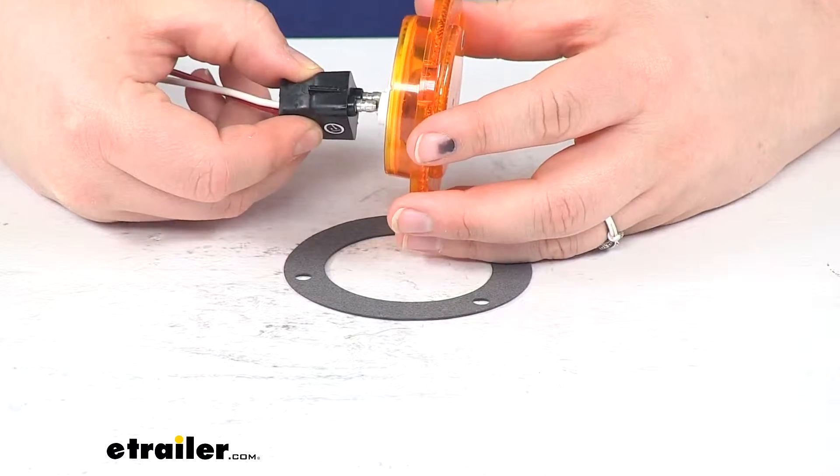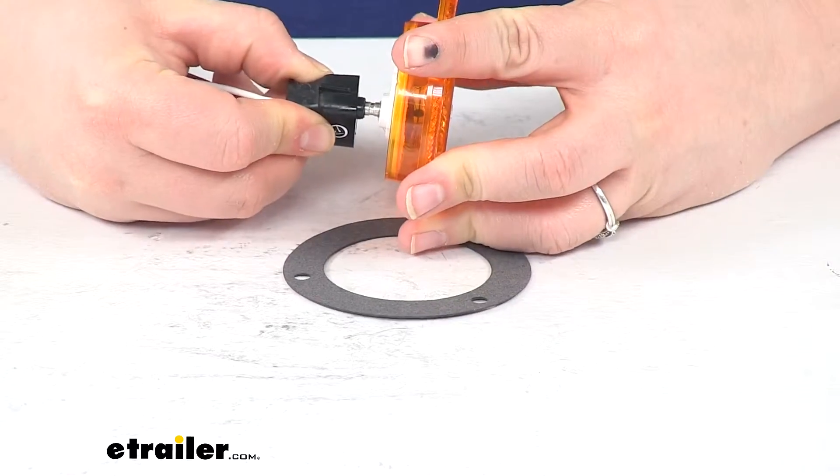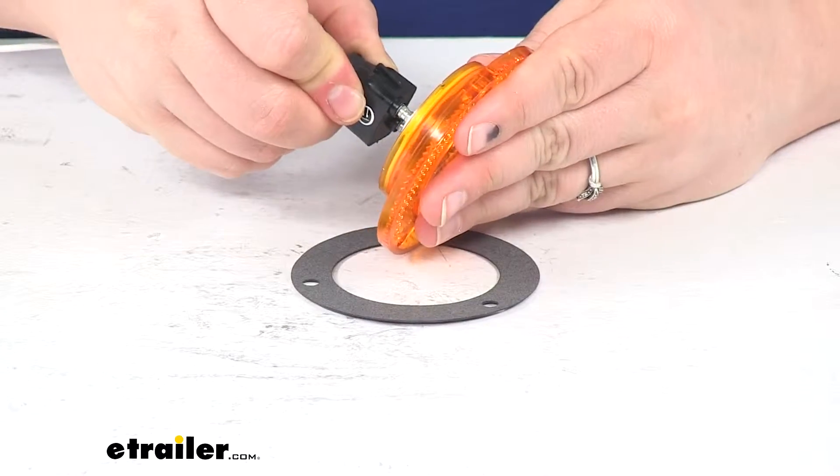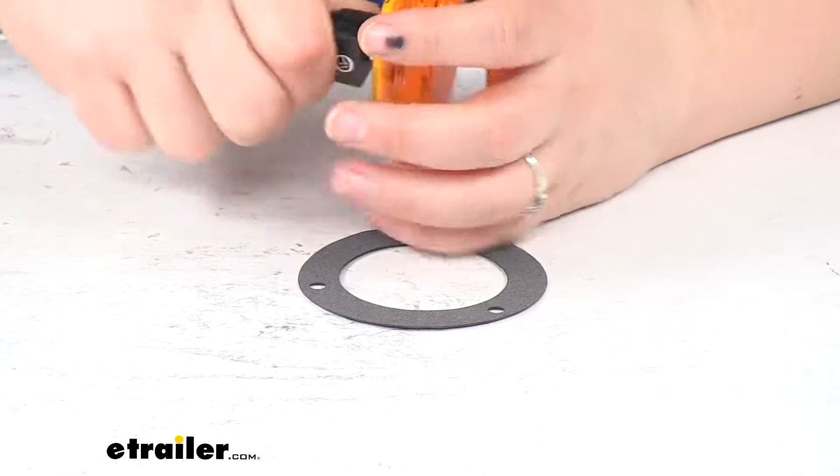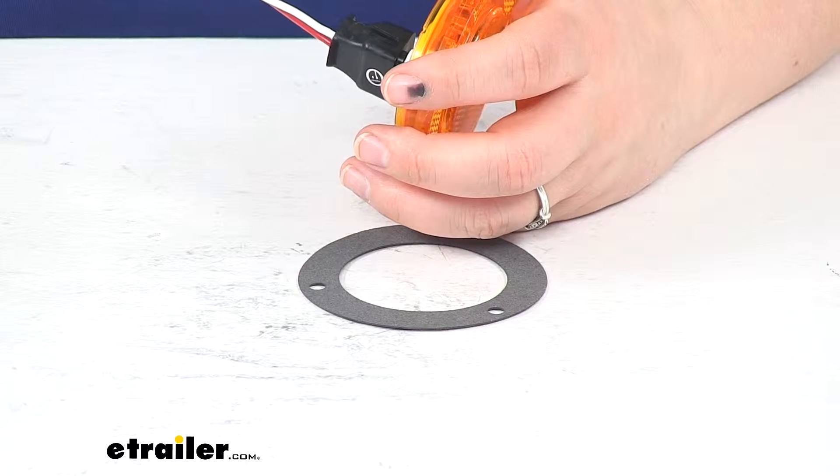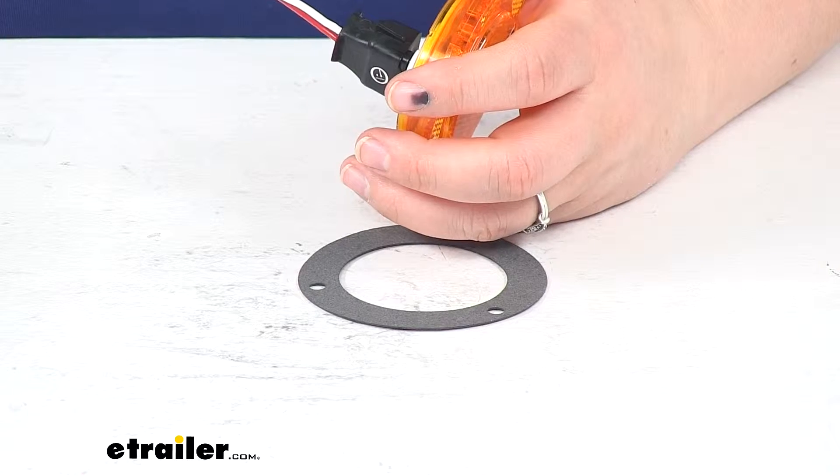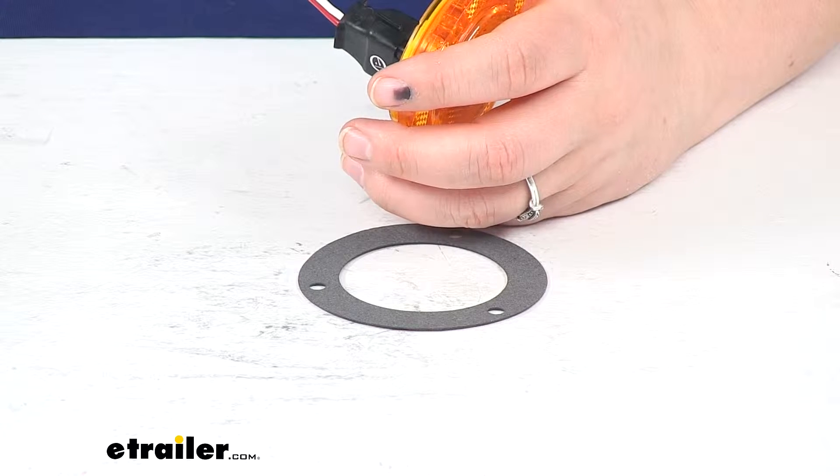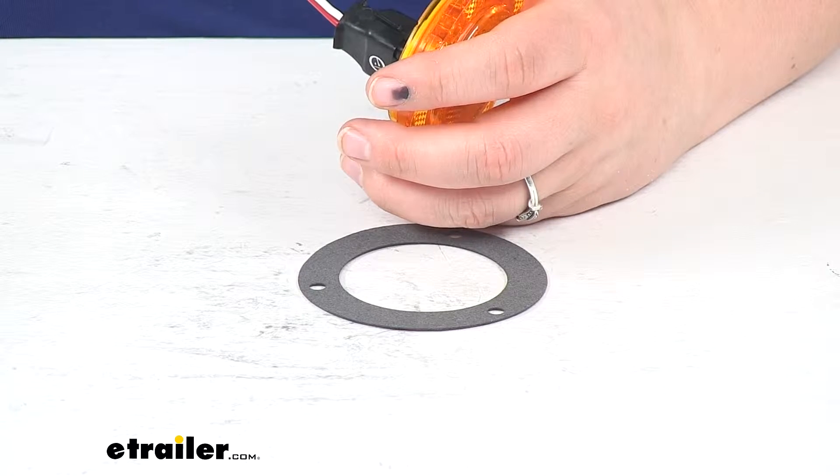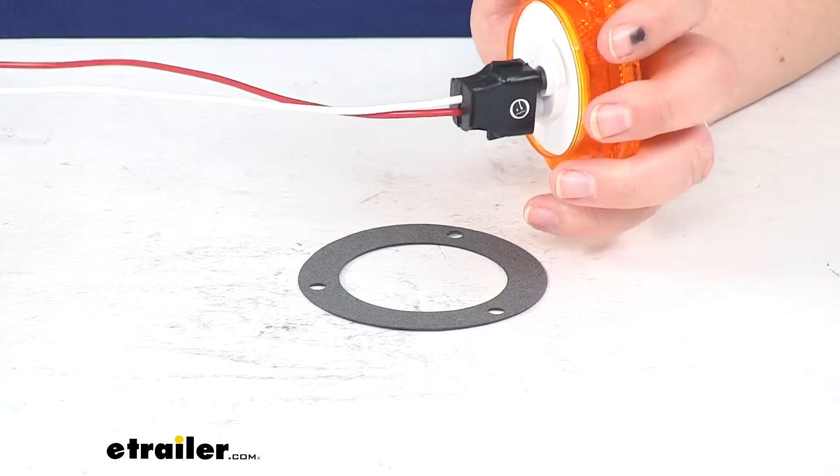So I've got my two prong plug here. This is sold separately. This one in particular is going to be part number B431-49. That's the Peterson two wire pigtail. That is also available here at eTrailer.com if you want to pick that up to go with your light.